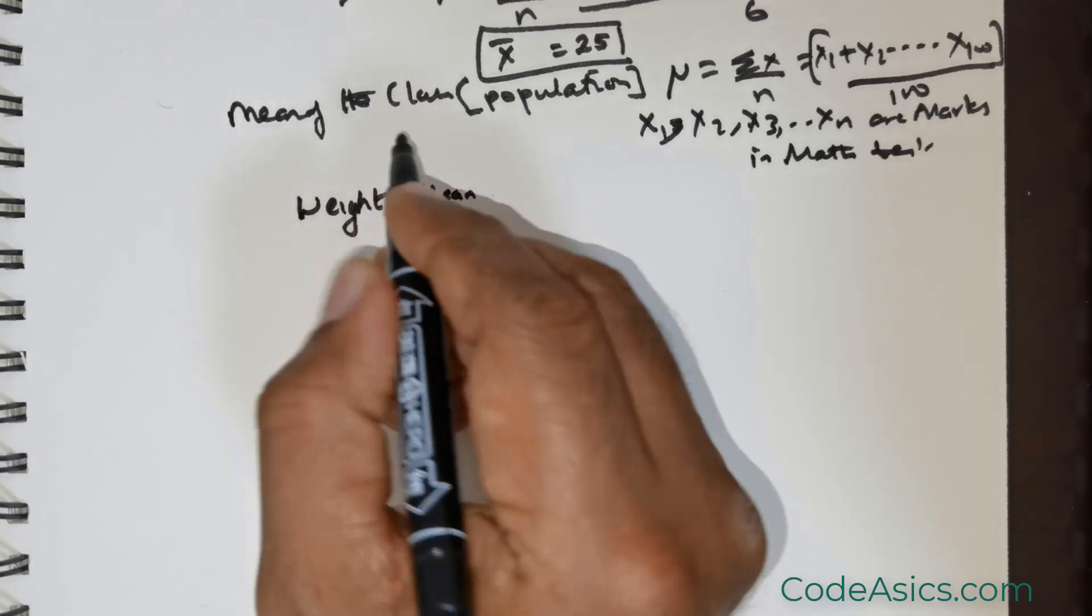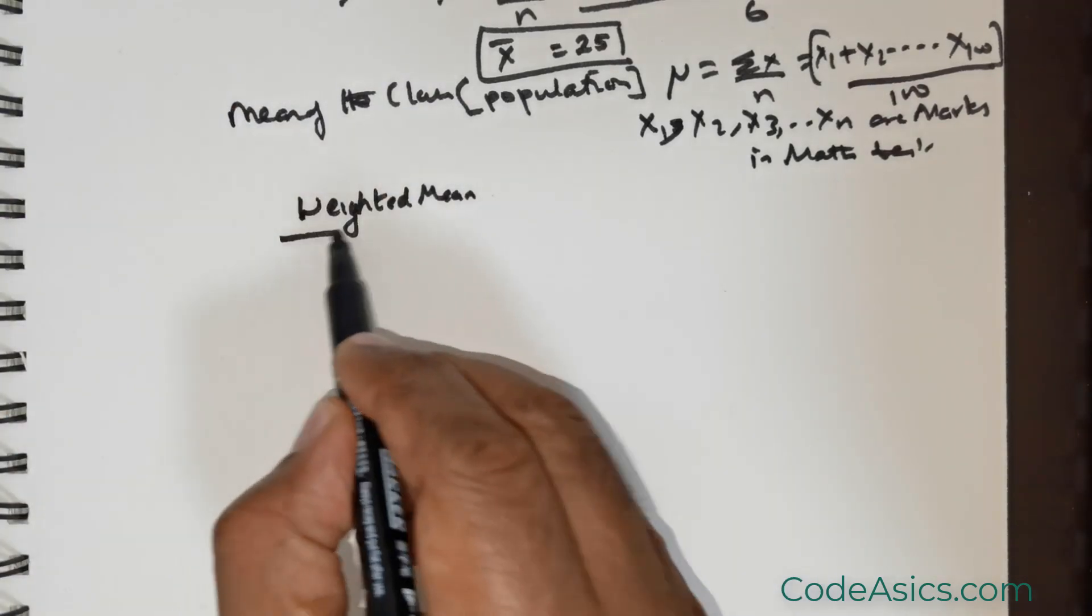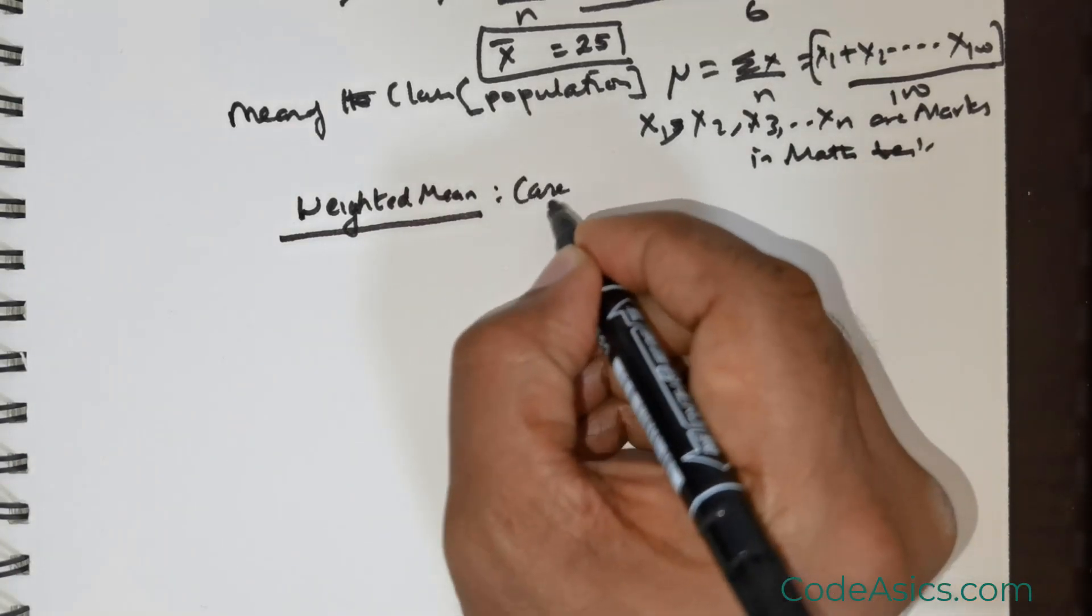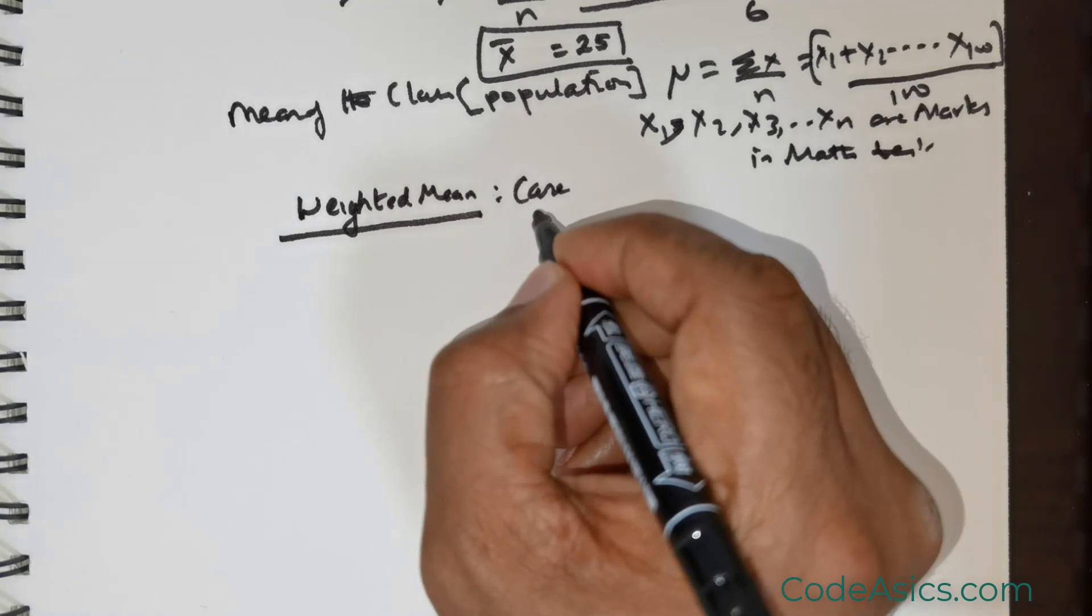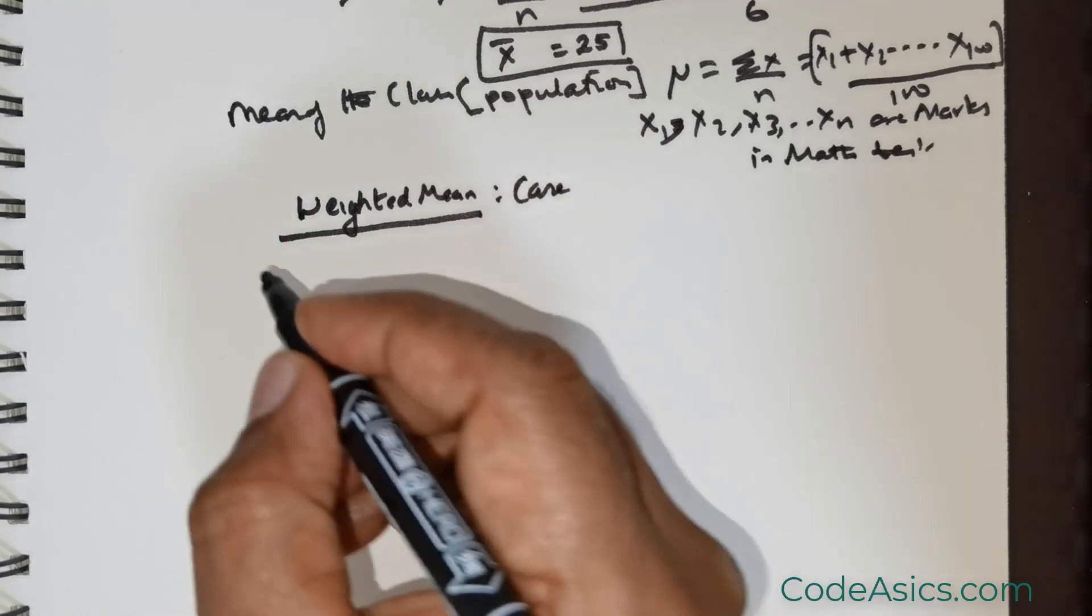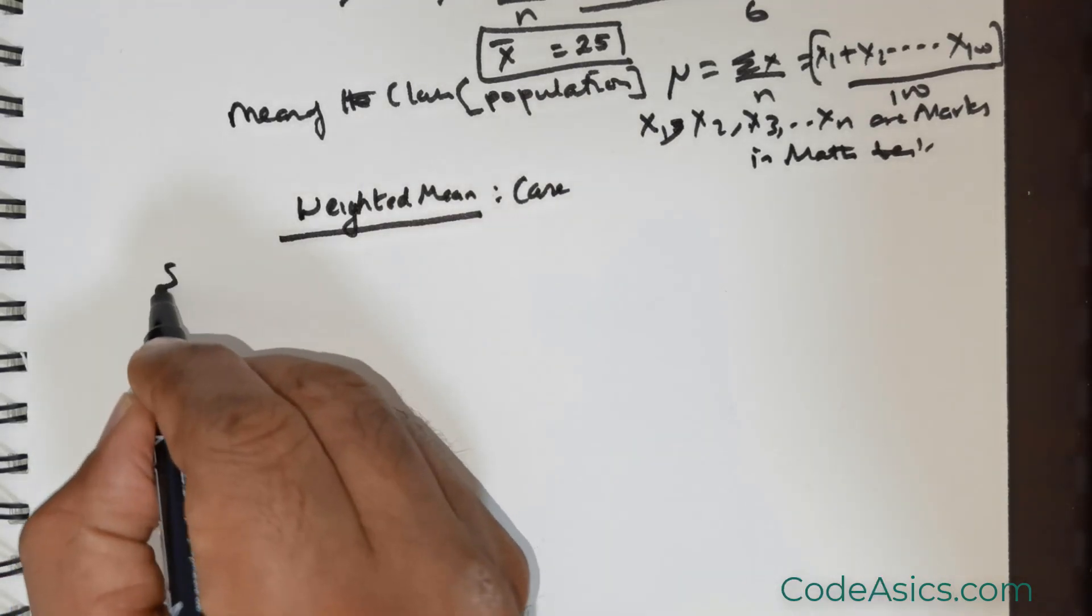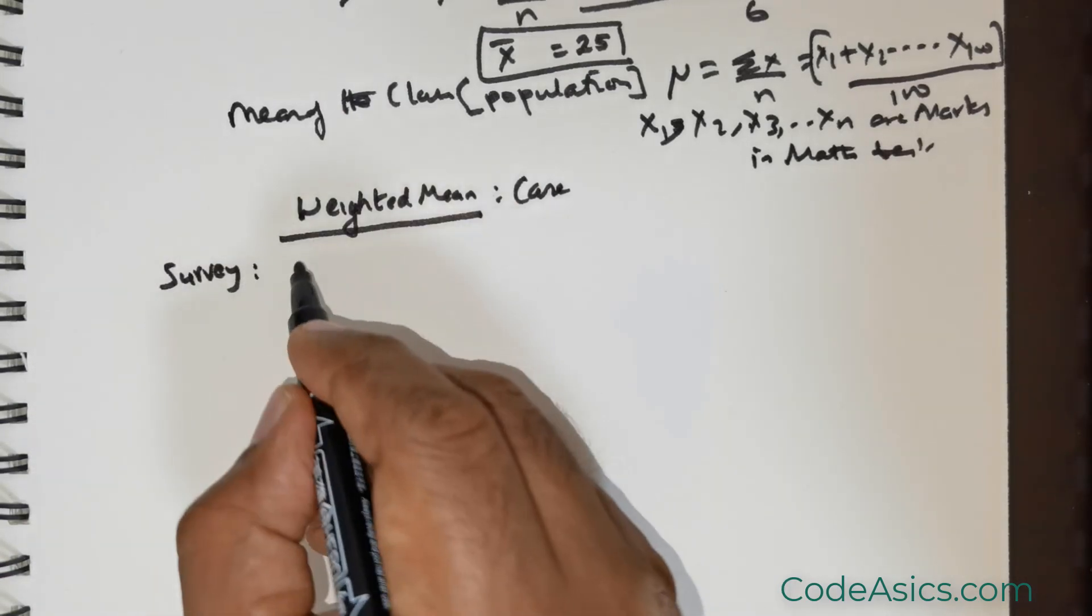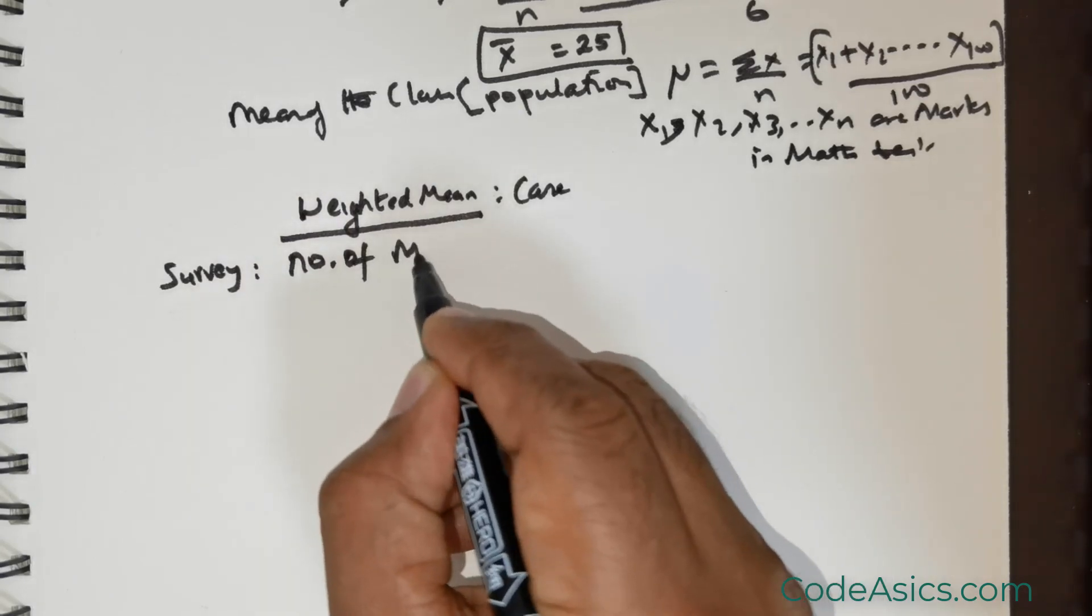Now when do we have this issue, or when exactly would we come across this case? I'm going to give you this illustration. There is a survey company conducting a study on the number of mobile phones.